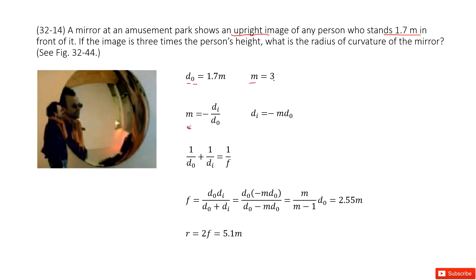First, we look at the definition of magnification: it is negative Di over D0. From this equation we can get Di, which is negative m times D0. Then we have an equation that connects D0, Di, and f in one equation, and we can convert this to get the function for f.